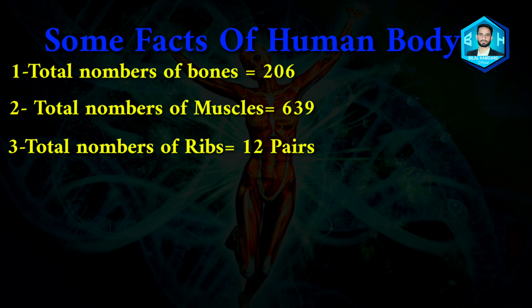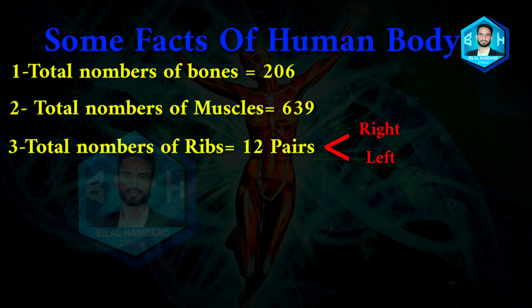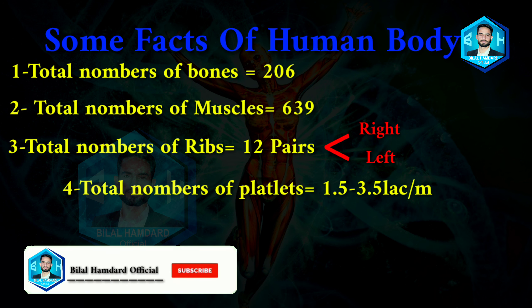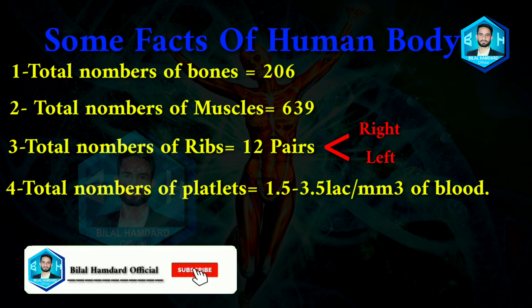The ribs are 24 in total, 12 on the right and 12 on the left side. That means 12 pairs are located on each side, so 24 ribs are located altogether on both sides.